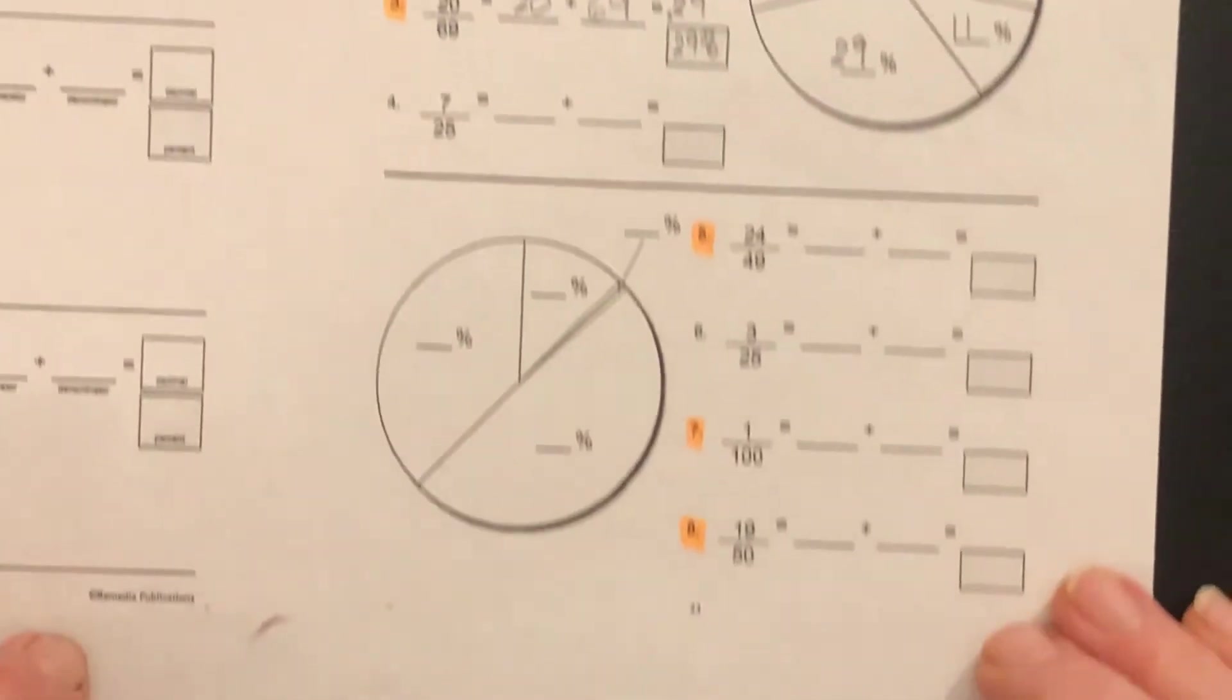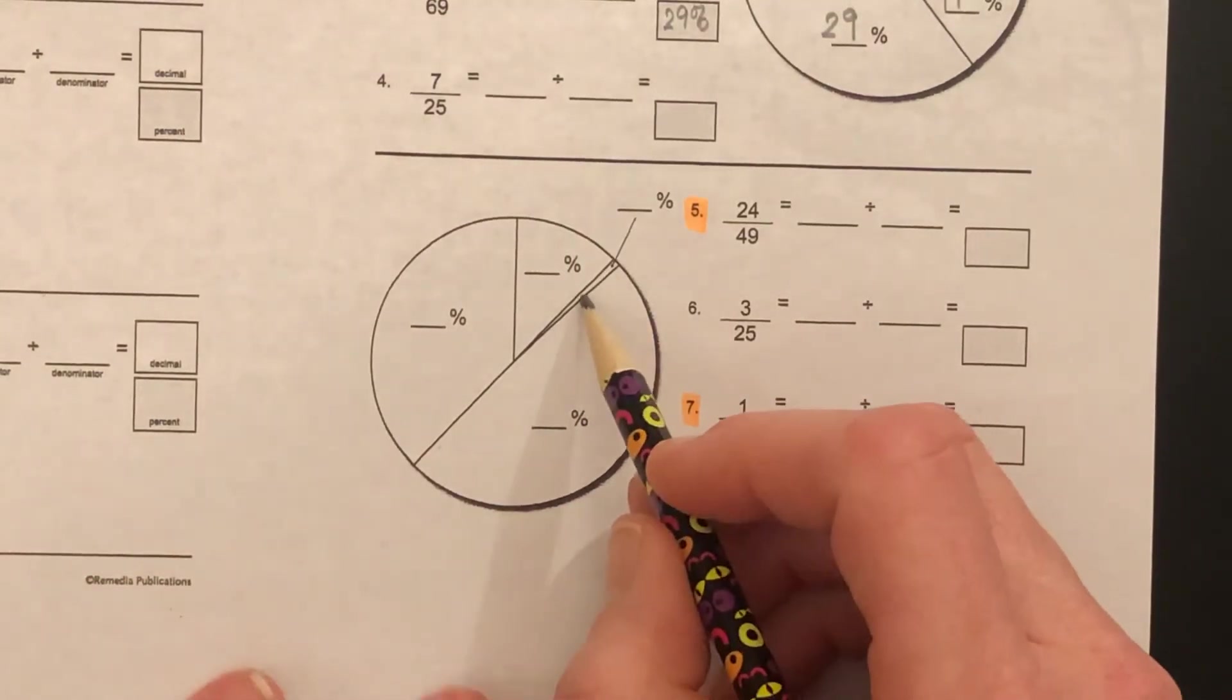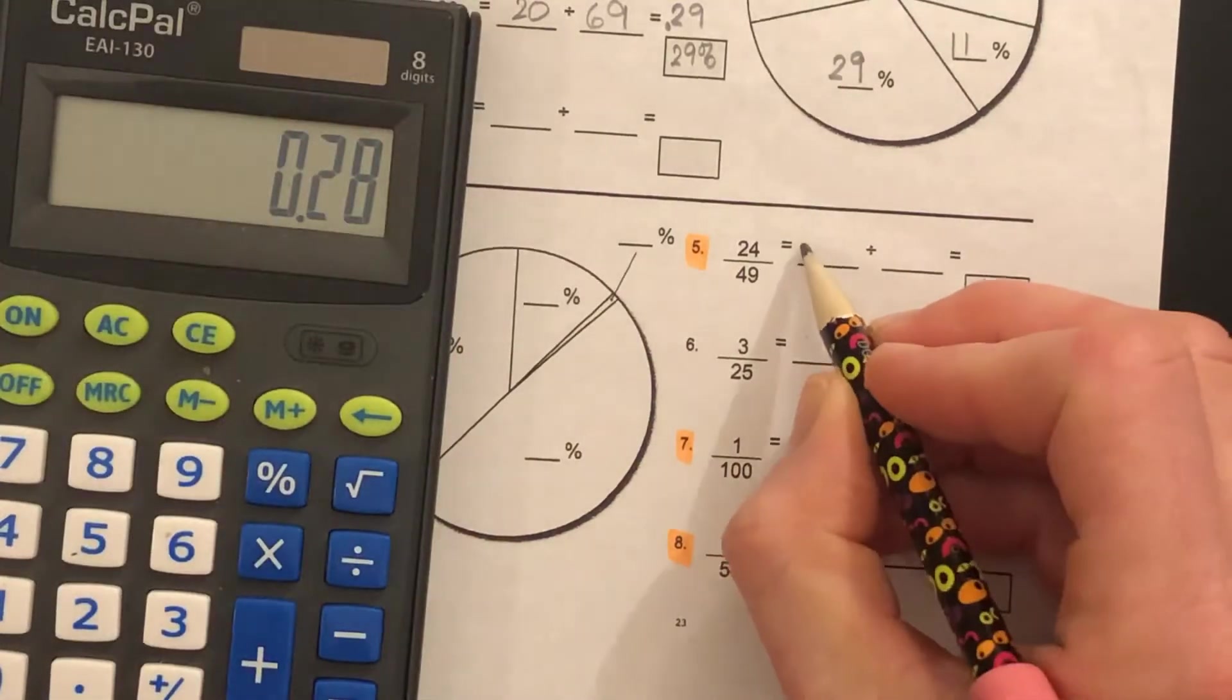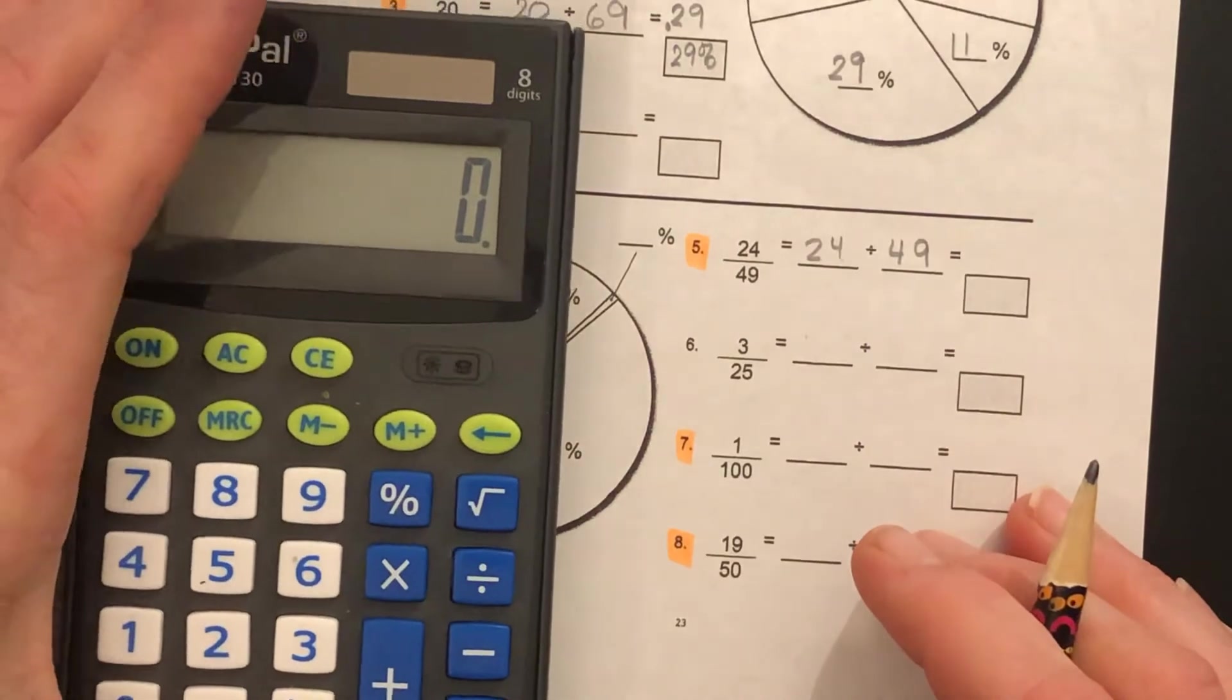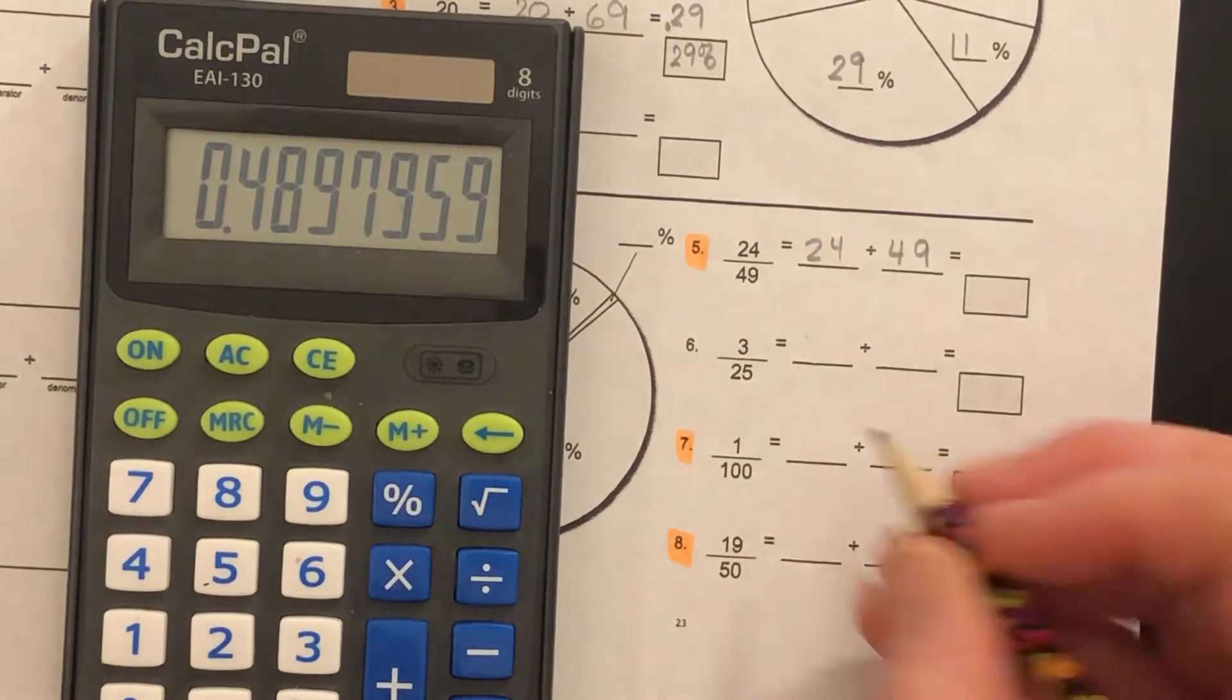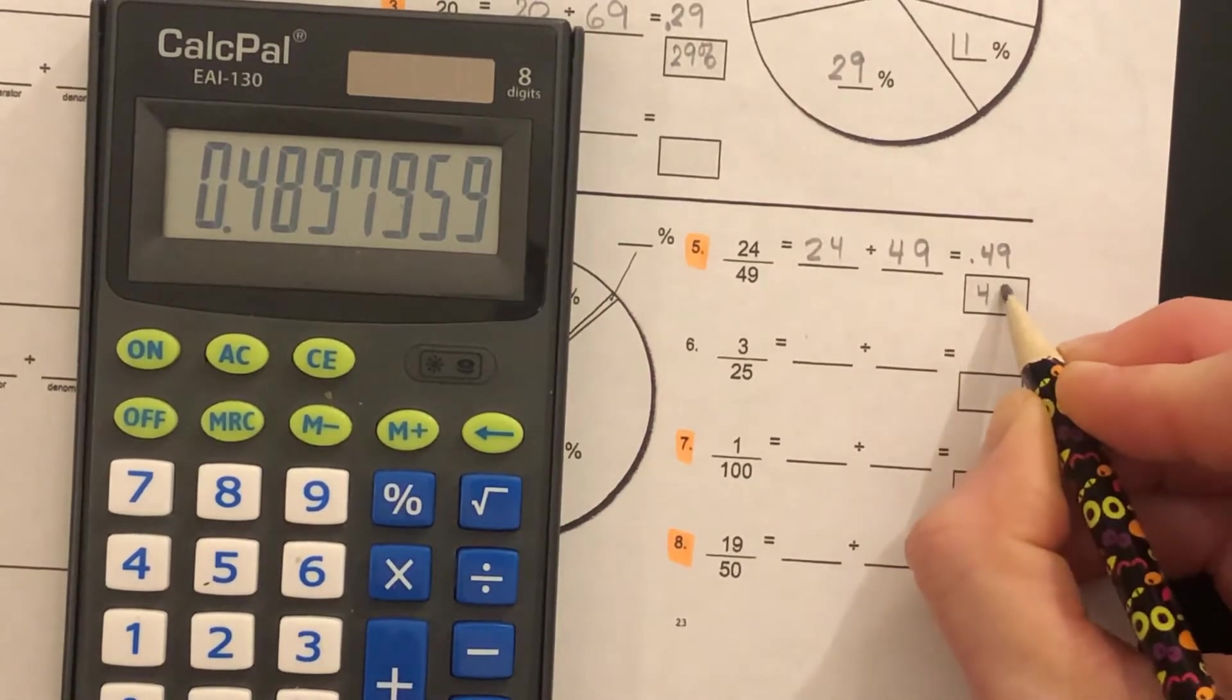We've got another circle graph or pie graph underneath. This section is so small you can't even write the percent inside of it. We'll do 5, 7, and 8. Number 5 is 24/49: 24 divided by 49. It's 0.4, we round it up to 0.49. Forty-nine hundredths in decimal form is forty-nine percent.